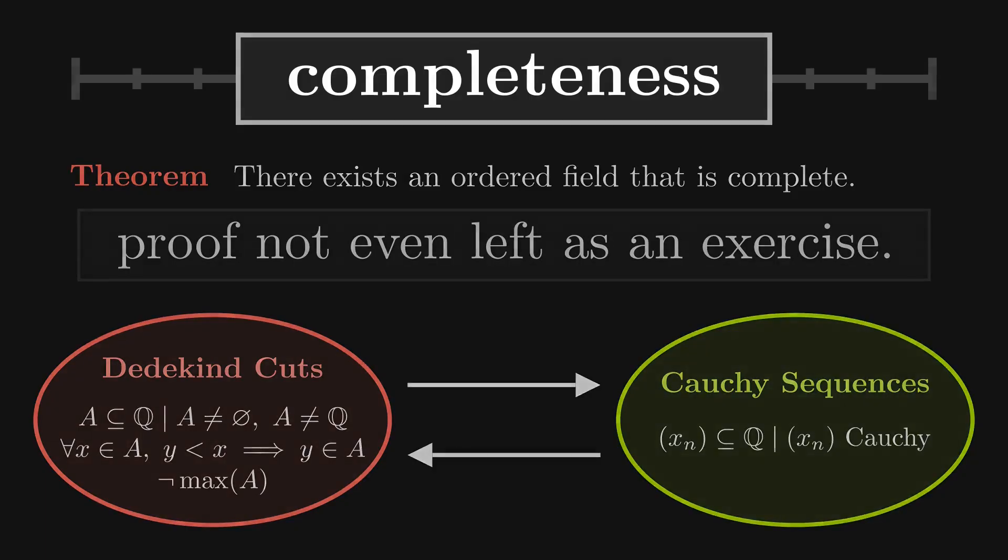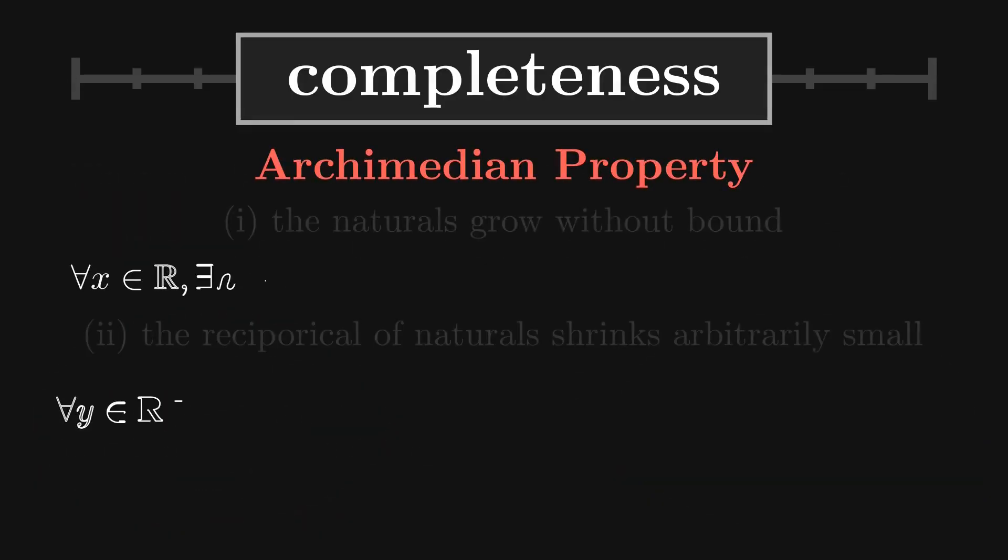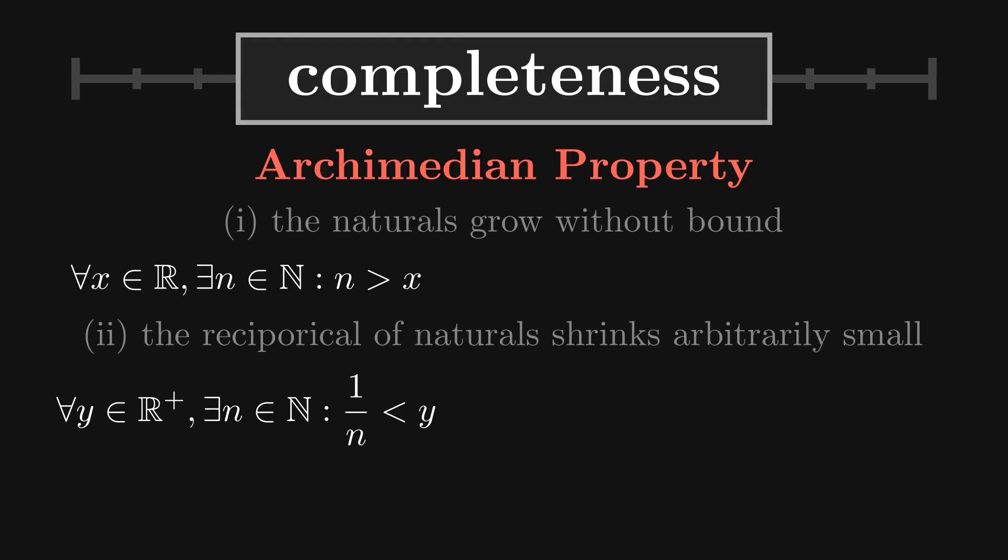One of the first results that can be derived from the completeness of real numbers is what is called the Archimedean property. It is a mathematical statement that expresses two key facts which are related. First, we show that the naturals grow without bound, then use that to deduce that the reciprocal of naturals can be made arbitrarily small. The proof is neat because it combines the idea of unboundedness with boundedness.